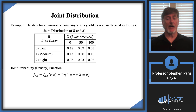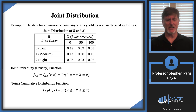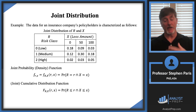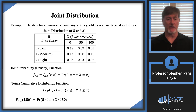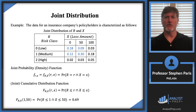Just like in the single variable case, we have a joint cumulative distribution function. I've got cap F with a subscript of cap R and cap X, which is the probability that cap R is less than or equal to r and cap X is less than or equal to x. For instance, evaluating at 1 comma 50 gives the probability that cap R ≤ 1 and cap X ≤ 50. Looking at those values in the table highlighted in blue and adding them up, I get 0.69.